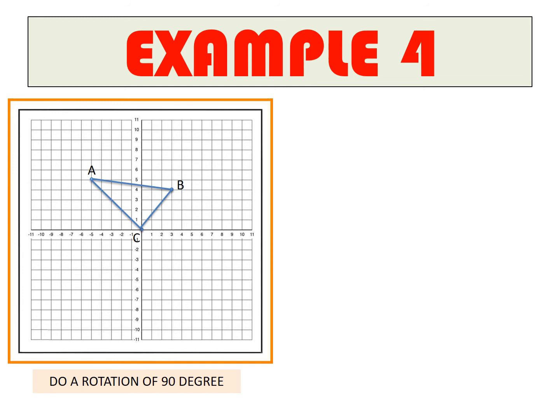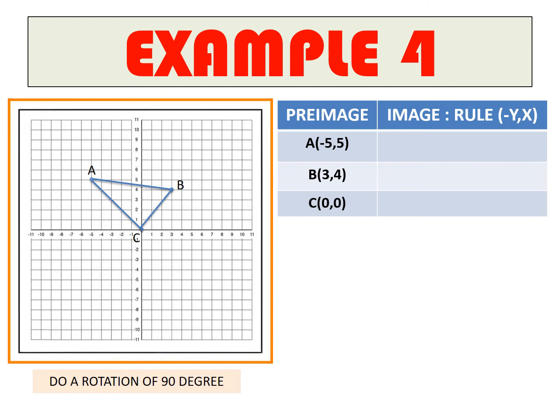Example 4: Given triangle ABC with A(-5, 5), B(3, 4), and C(0, 0), rotate 90°. You flip the coordinates and change the sign of the X. For each point, the Y becomes X and the X becomes Y, but you change the sign of the new X. After applying the rule, plot the three transformed points in the coordinate system, label the image, connect the points, and you have the image of the pre-image.